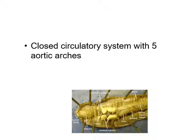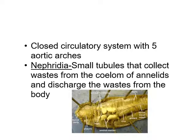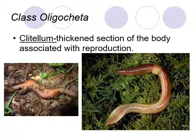The earthworm has a closed circulatory system with five small hearts called aortic arches that pump blood throughout the veins. Earthworms also have nephridia — small tubules that collect waste from the body cavity (the coelom) and discharge it from the body, functioning almost like small kidneys. Even though earthworms look simple, they have some complicated internal systems. The clitellum is the thickened section near the head associated with reproduction — this is where sperm and egg cells are made. Earthworms are hermaphrodites, so they can mate with any other earthworm.